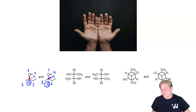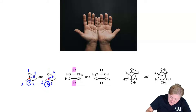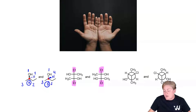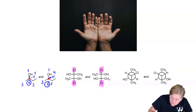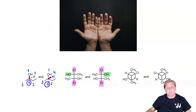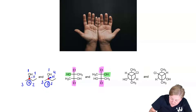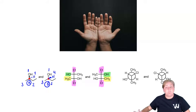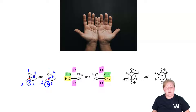Let's see how this works with a Fisher projection. I'll use a highlighter to help. The top and bottom groups are the same, so we just need to track the crosshairs where the Fisher projection groups meet. The alcohol is on the left in one structure and on the right in the other — it's flipped. The methyl group is similarly on the left in one and the right in the other. Both groups are opposite to each other, so these are also enantiomers.